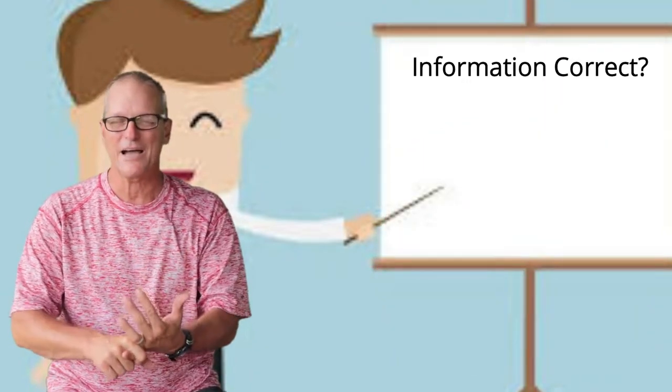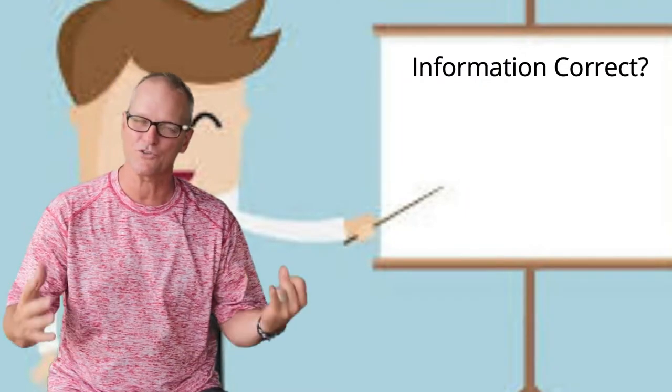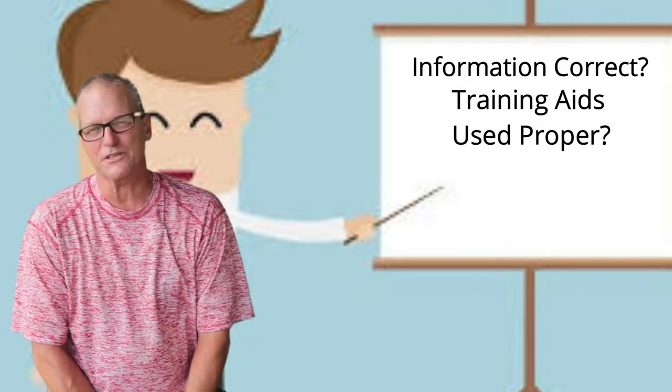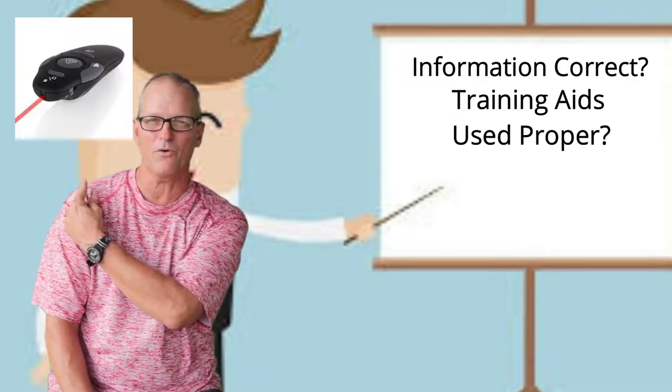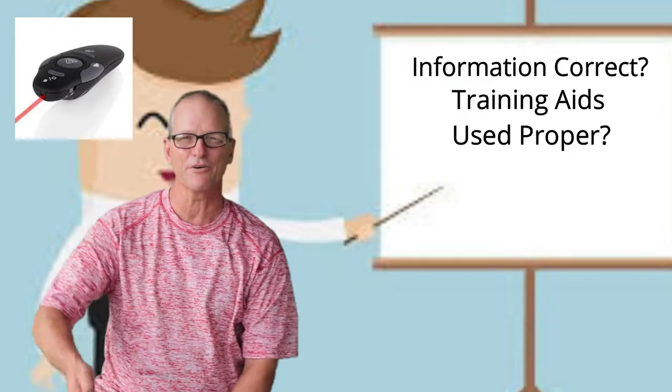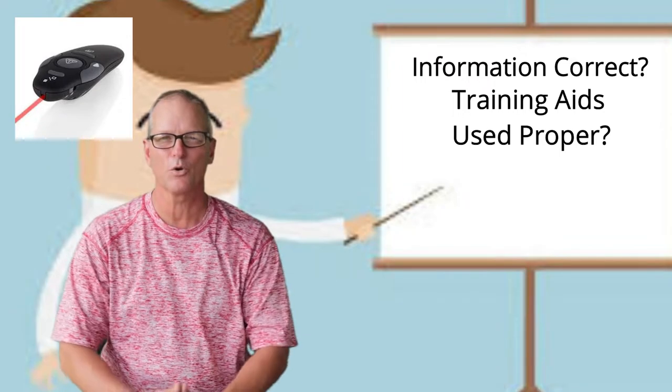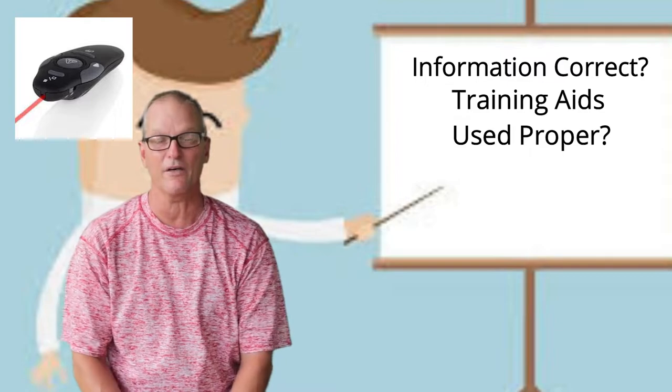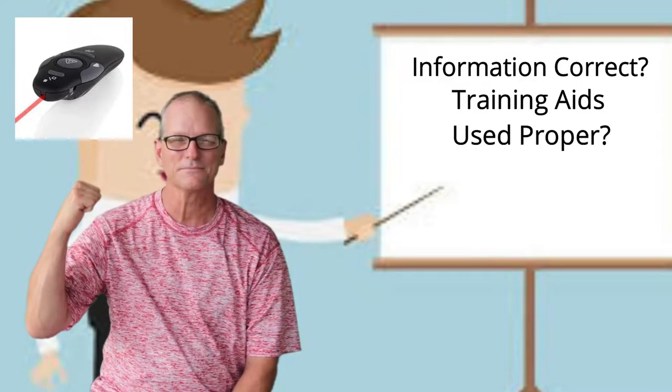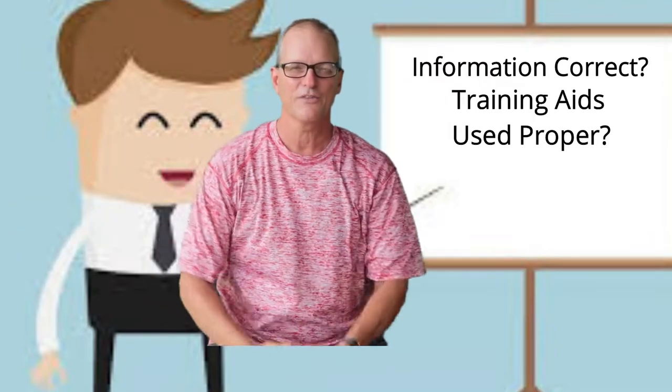The body needs to follow that established logical progression. Things to consider in your body and your story: was the information correct? A lot of times people give out incorrect information — maybe they didn't do enough homework. Were the training aids used effectively? If you put something up that you're talking about, once you move on to the next subject, that training aid should go away. Don't leave it up and don't give it to your audience — it'll draw their attention away. Use the slide to emphasize the information, then move to the next one.